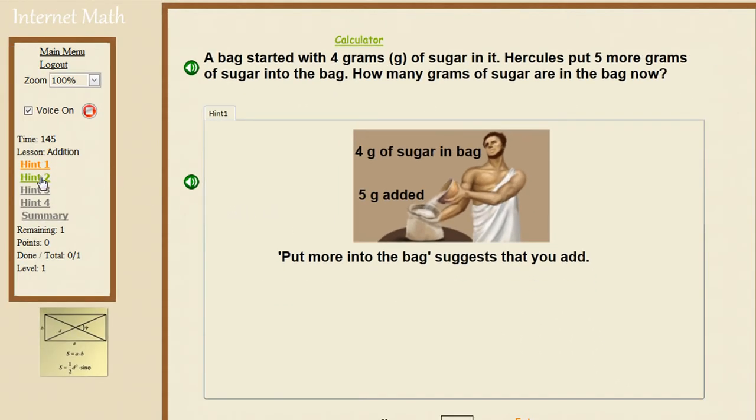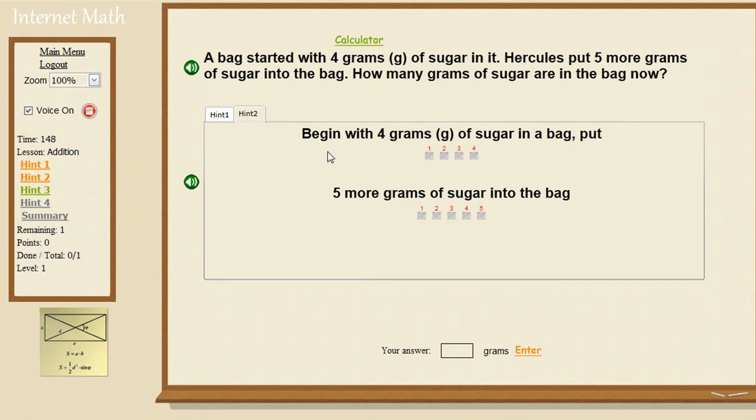If we're still confused, the second hint shows us graphically how many grams we have. We have 4 grams of sugar and we have 5 grams of sugar.